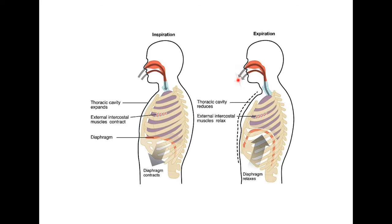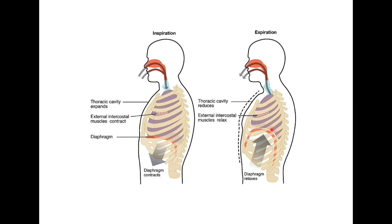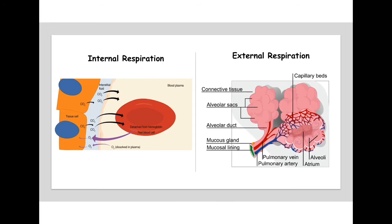The opposite of inspiration is expiration — breathing out. Notice the arrow showing air leaving, and the lungs are much smaller here. The intercostal muscles relax so the rib cage is no longer elevated, and the diaphragm is also relaxing and moving upward rather than downward. When we're expiring, the rib cage is depressed and the diaphragm is relaxed, and all of this allows the air to go out.